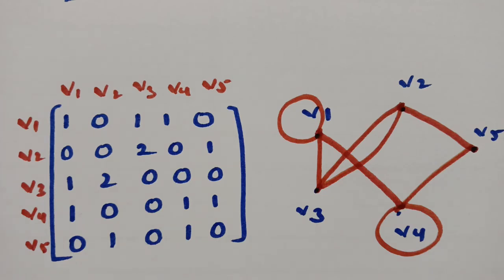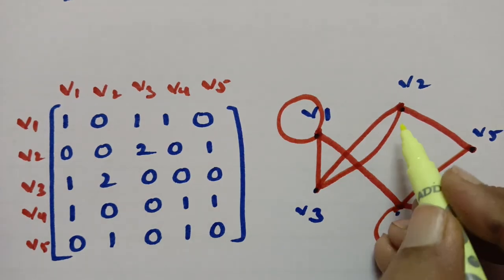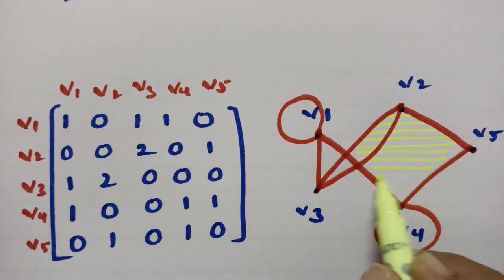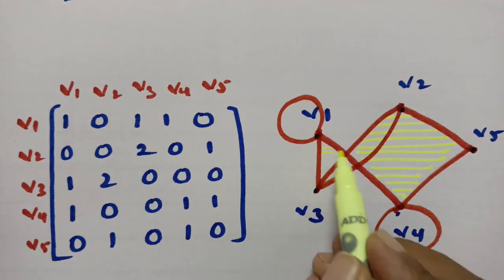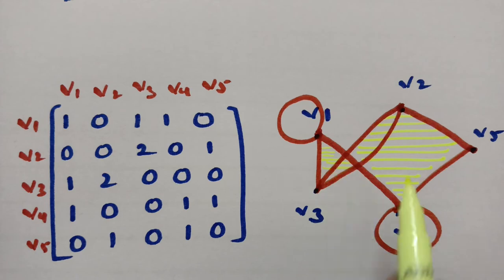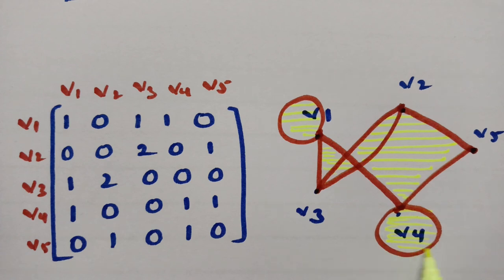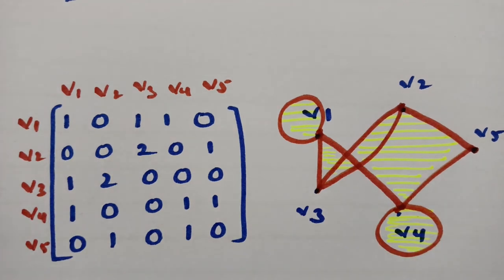First of all, we have to take all the vertices and connect all the edges if there is 1. If it is 0, we have to leave it as it is. This is the undirected graph. When coming to directed graph, it is a different method, and I will be posting a video on that — please follow that also.